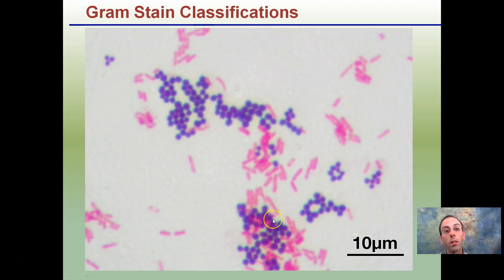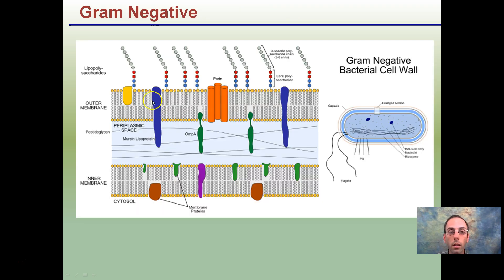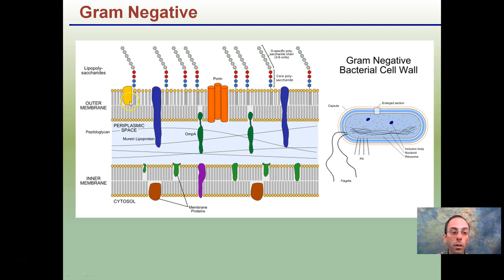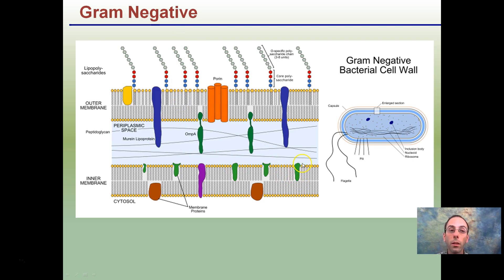This slide contains both gram positives and gram negatives together. Looking more closely at gram negatives and zooming in on the cell layers, we see there's an inner and outer membrane with the peptidoglycan sandwiched between the two. As a result, the crystal violet can't really bind or stick to this very well, and this is why we call them gram negatives.